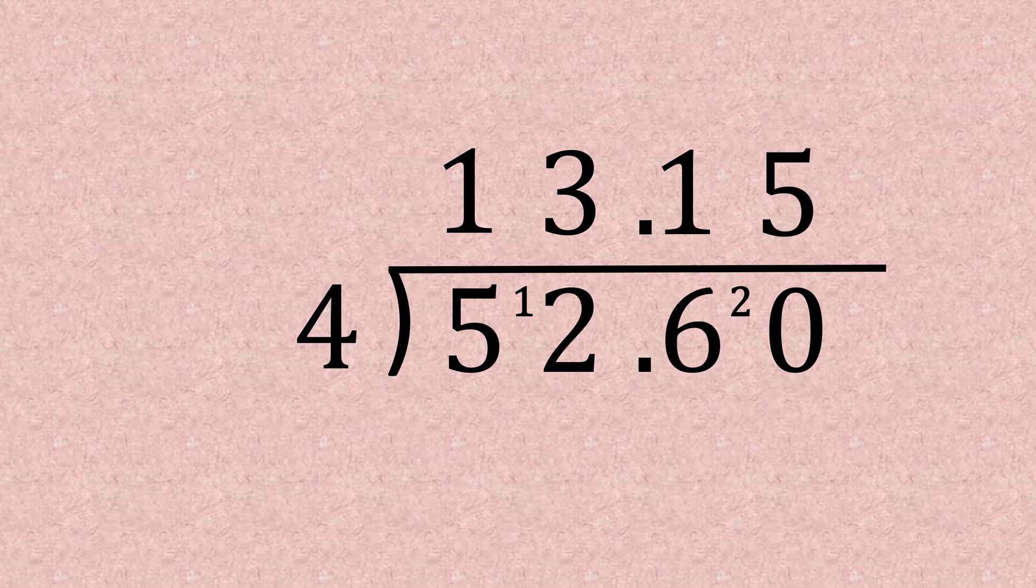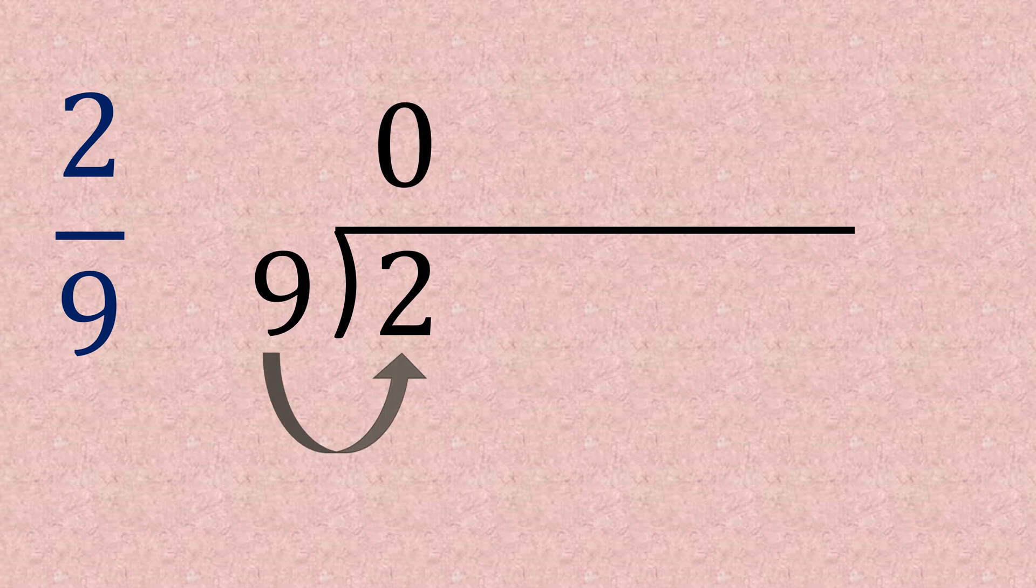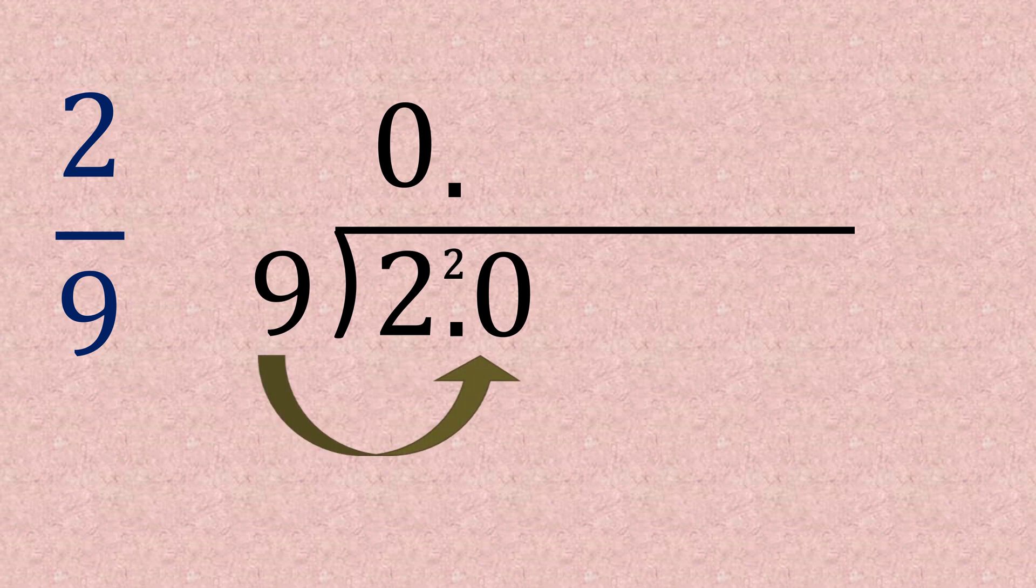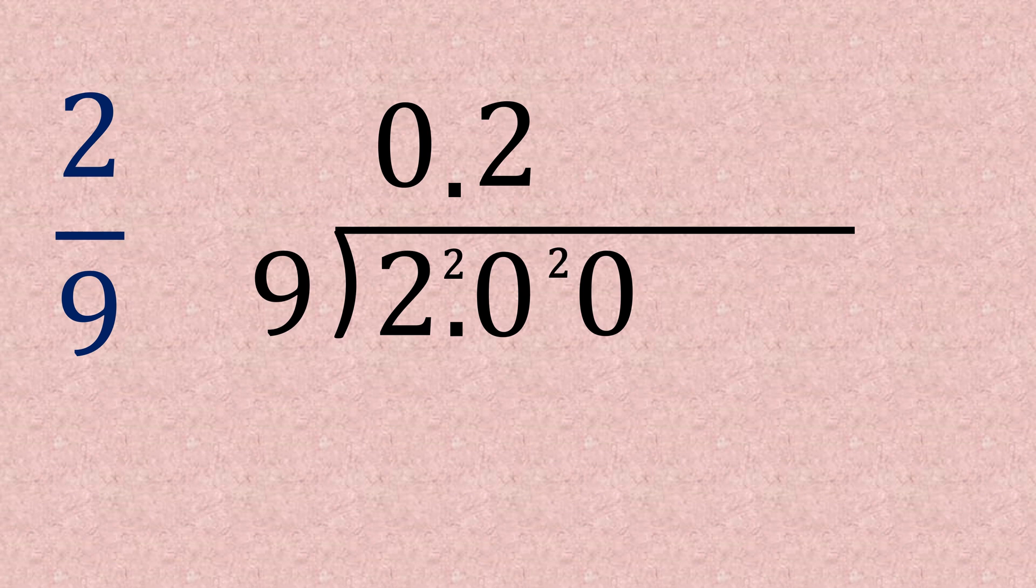So you might get asked to put this fraction into a decimal, and it may be a non-calculator paper, so we'd use short division for this. So let's go again. Nine into two, well that doesn't go, so zero up the top, decimal point, zero on the bottom. So now we carry the two, so 20 divided by nine, we know that goes two times with two remainder.